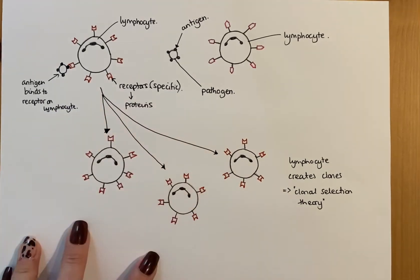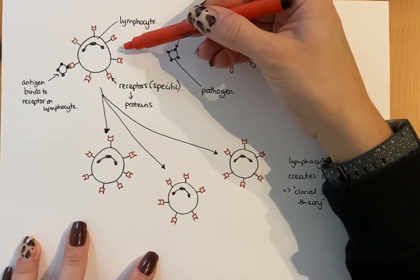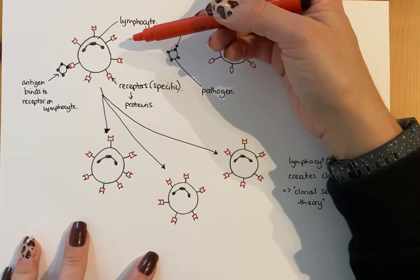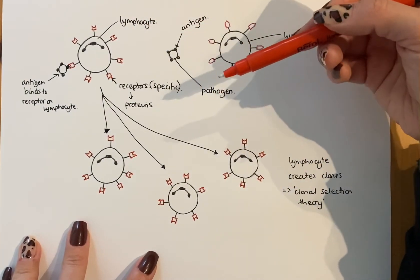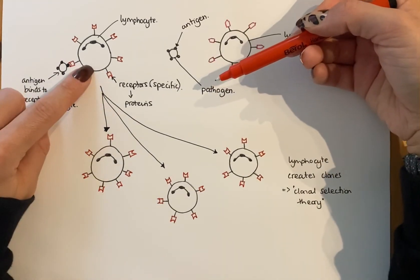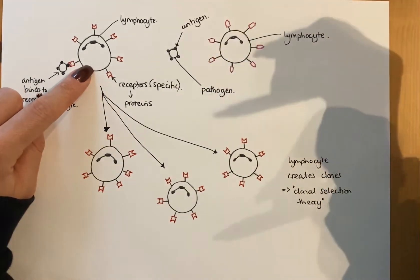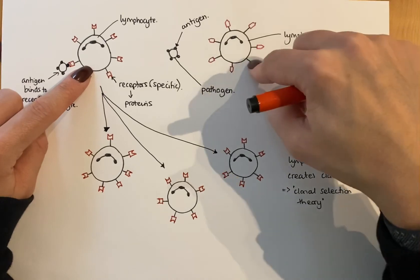Now this is why your immune system is actually really remarkable, because think of all the different colds and flus and diseases and things that you've had in your lifetime. You have a specific lymphocyte for every single one of those diseases that you've ever come across. You'll have one for the cold you had when you were two. You'll have one for the chickenpox you had when you were two and a half.